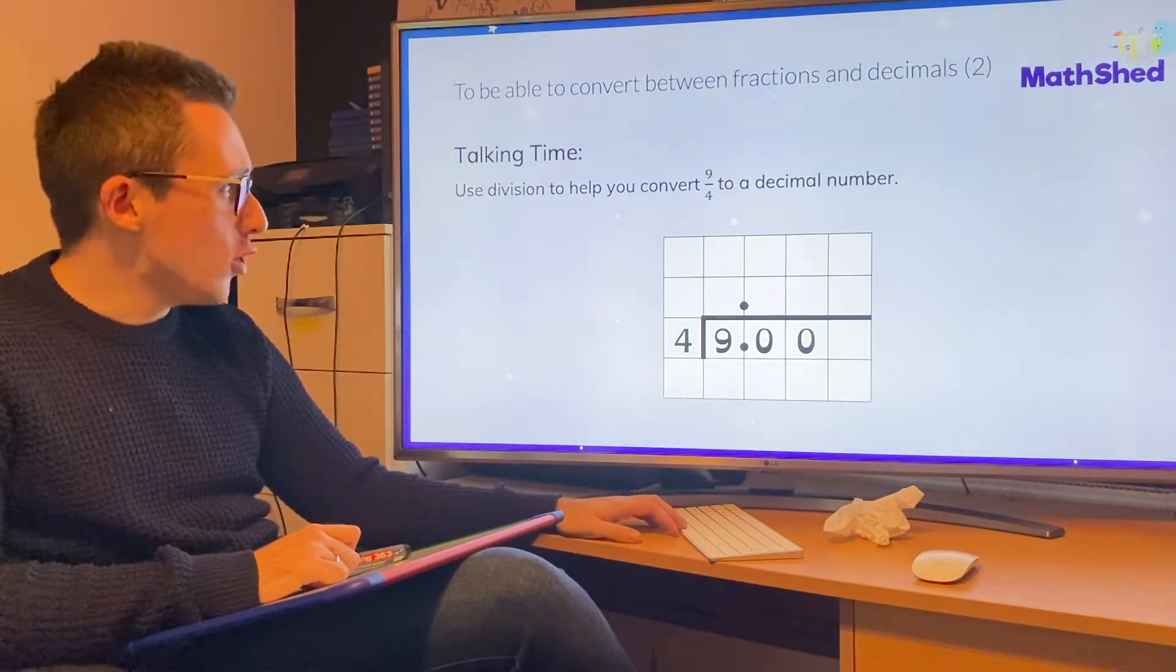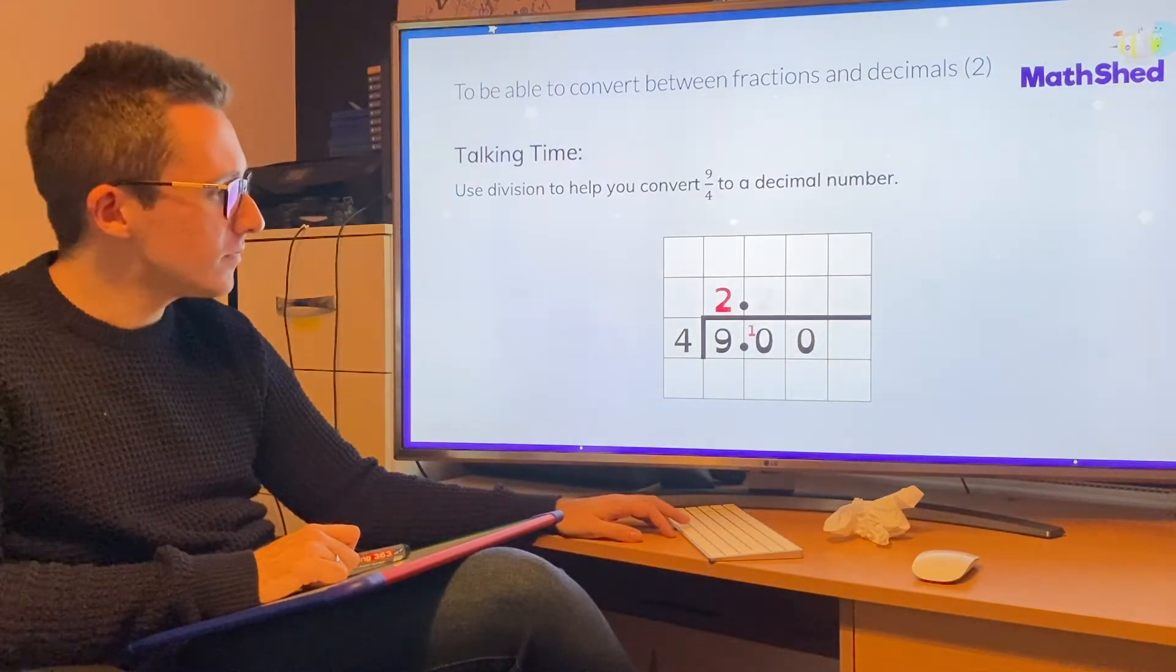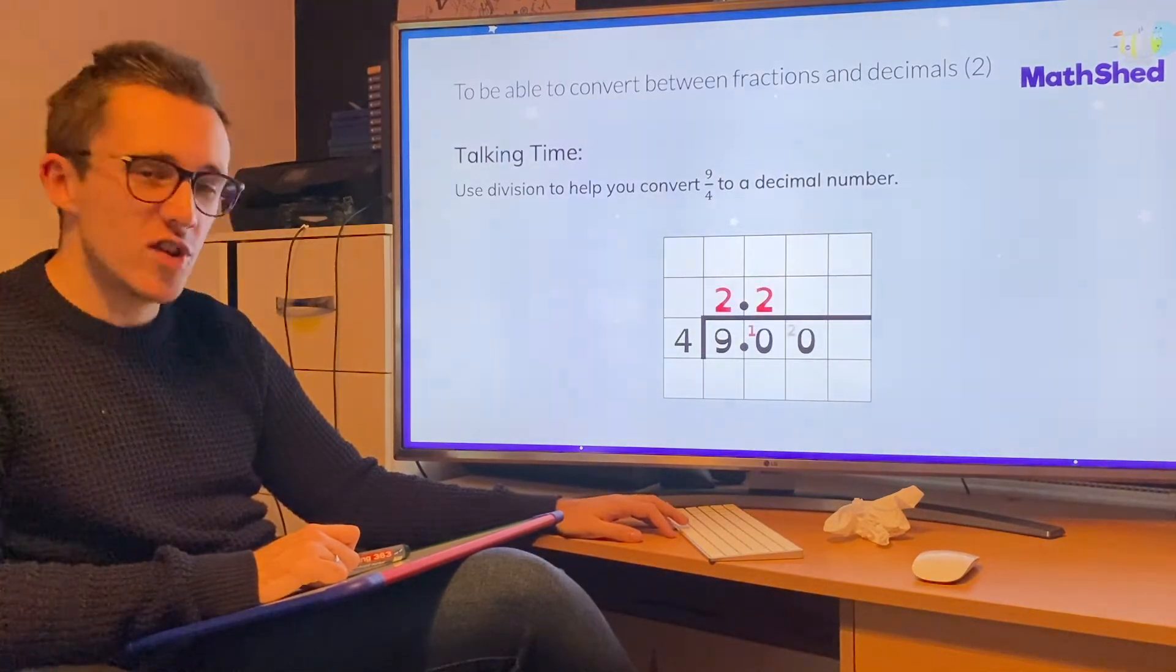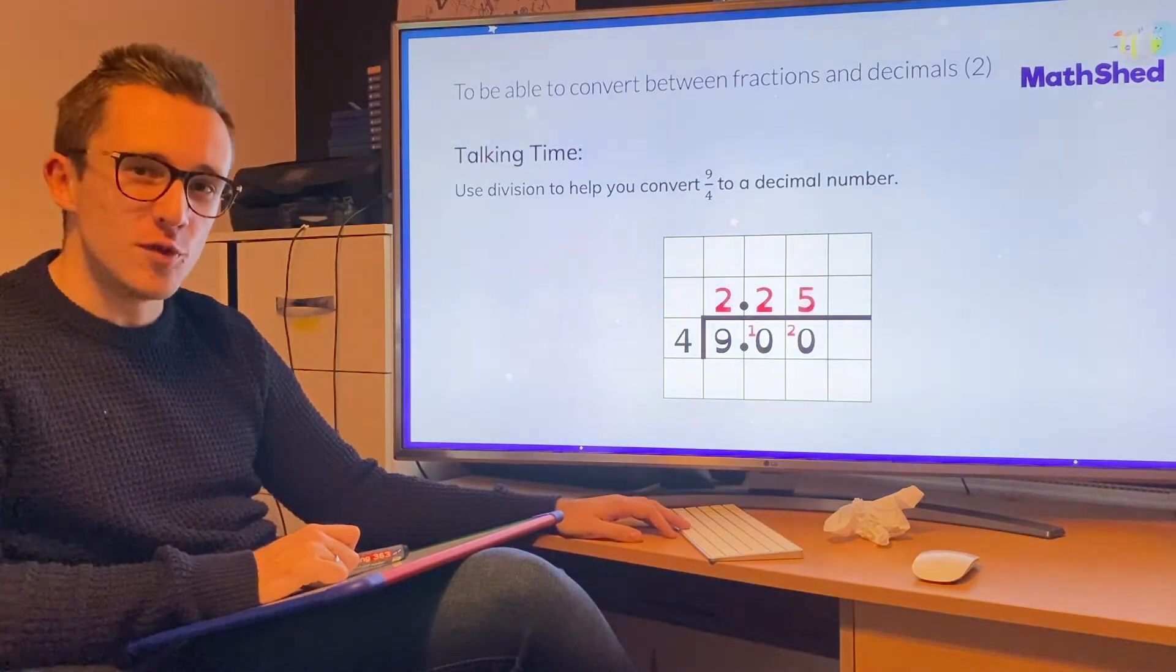We can do the same with nine over four. Twice, with one left over. Twice, with two left over. And five times. 2.25.